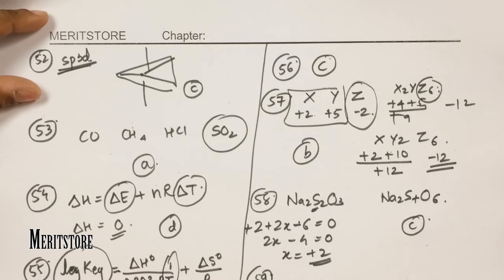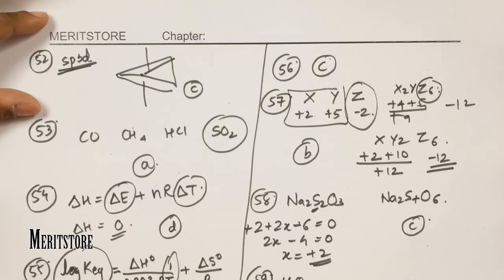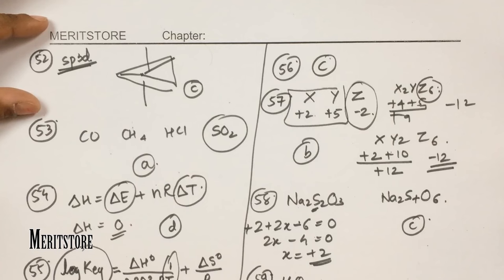Question number 59: in which reaction does H₂O₂ behave as a reducing agent? In H₂O₂, oxygen is in the −1 oxidation state. As a reducing agent, H₂O₂ undergoes oxidation — its oxidation state must increase from −1 toward 0. In option B, H₂O₂ is converted to O₂, where oxygen is in the 0 oxidation state. This means oxidation has occurred, so H₂O₂ acts as a reducing agent. Option B.